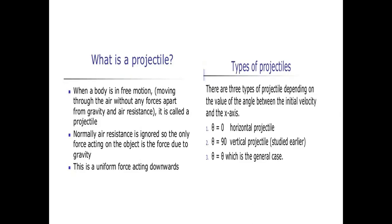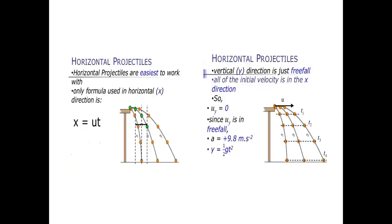There are three types of projectile depending upon the value of the angle theta between the initial velocity and the x-axis. If theta is zero, the velocity will be horizontal — that is a horizontal projectile. If theta equals 90 degrees, the velocity will be vertical — a vertical projectile, which we will learn in higher classes. If theta is a general value between zero and 90 degrees, that is the general case we will learn in this video.